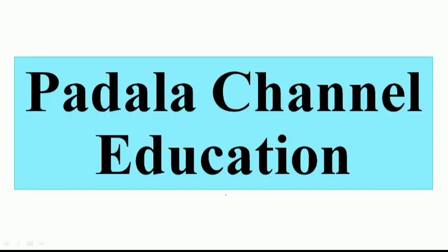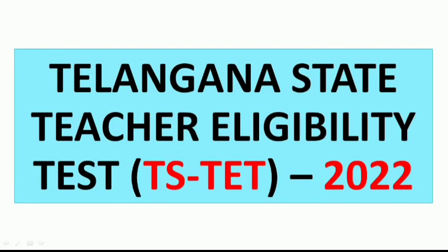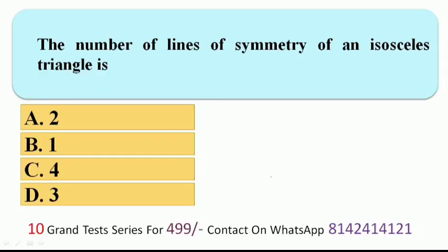Hello friends, welcome to Padala Channel Education. Telangana State Teacher Eligibility Test (TS TET) 2022 — today we are discussing the 2016 previous year question paper. The first question: the number of lines of symmetry of an isosceles triangle is — options: 2, 1, 4, or 3.